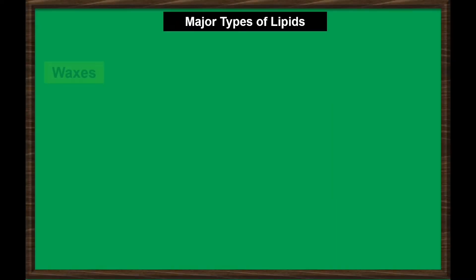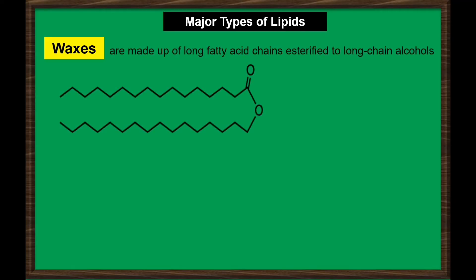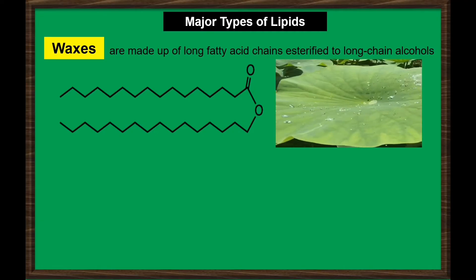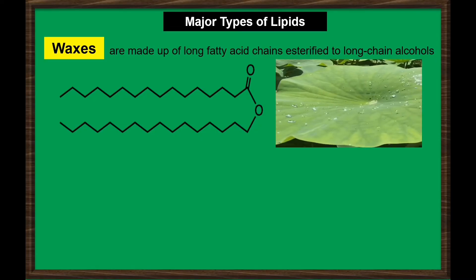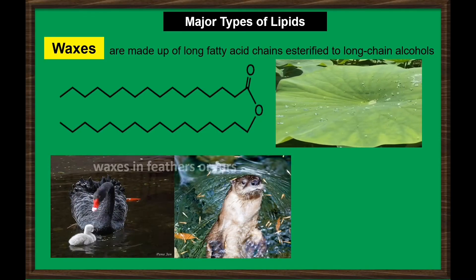The next type of lipids is waxes. Waxes are made up of long fatty acid chains esterified to long-chain alcohols. Because of the hydrophobic nature of waxes, they prevent water from sticking on the surface.